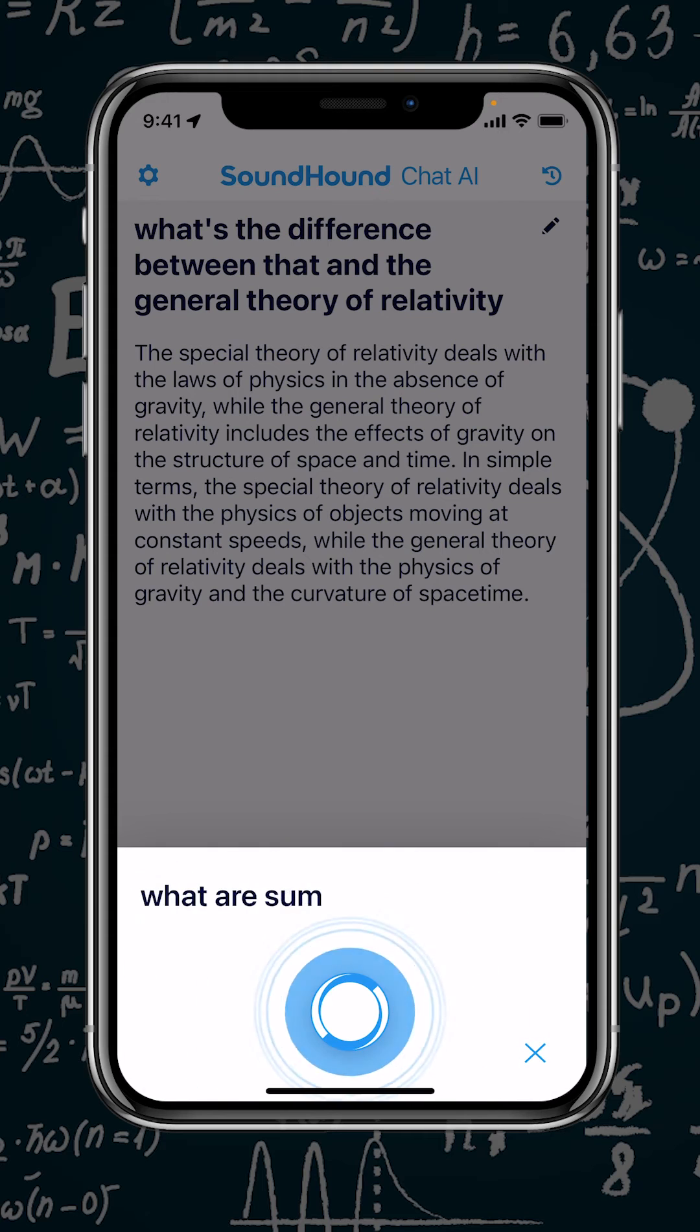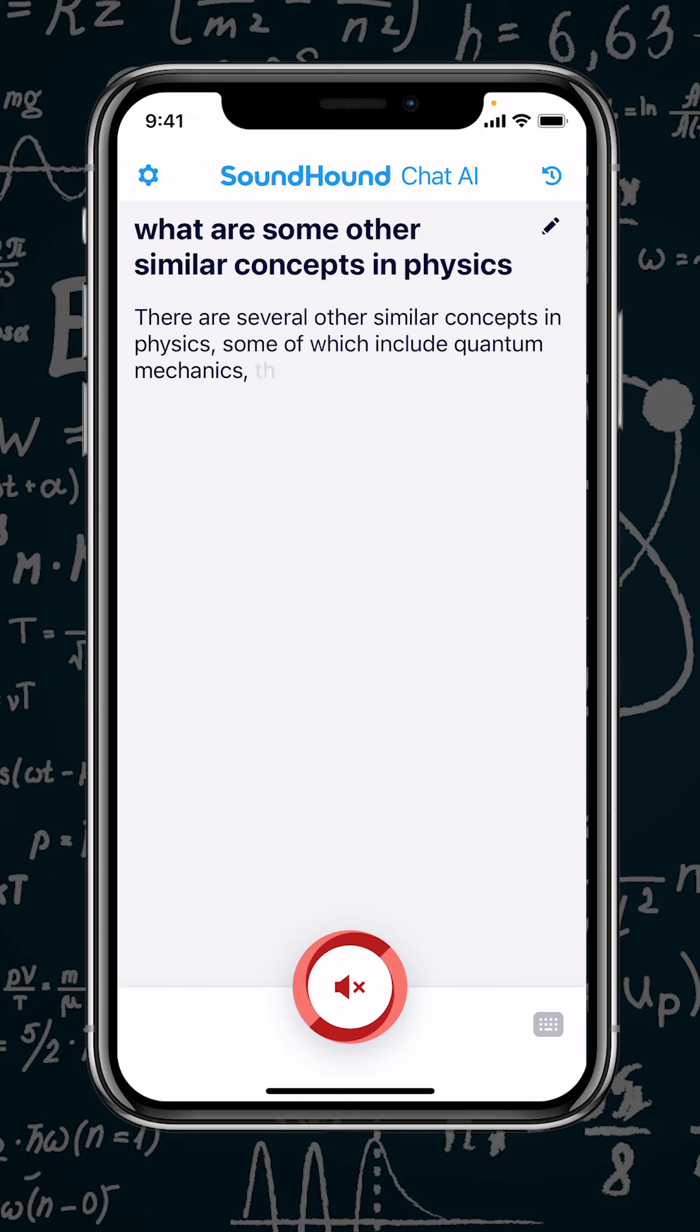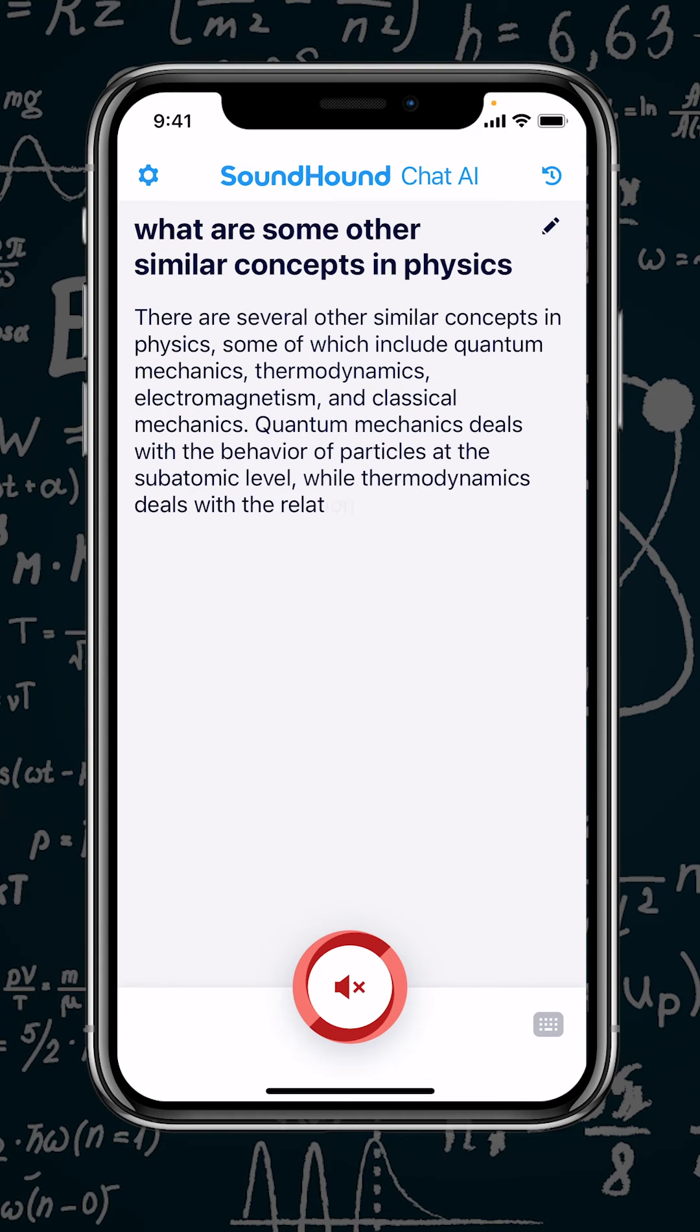What are some other similar concepts in physics? There are several other similar concepts in physics, some of which include quantum mechanics, thermodynamics, electromagnetism, and classical mechanics.